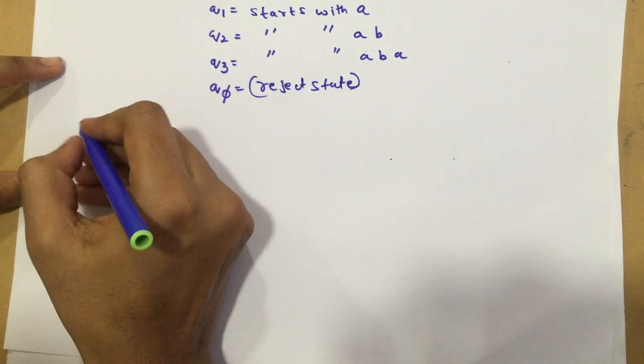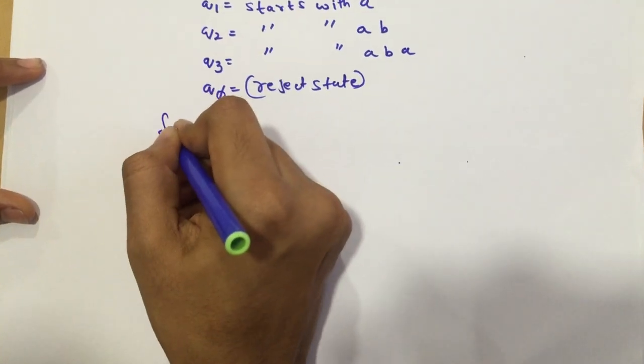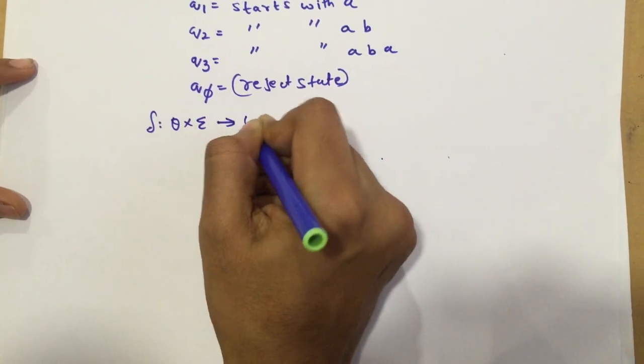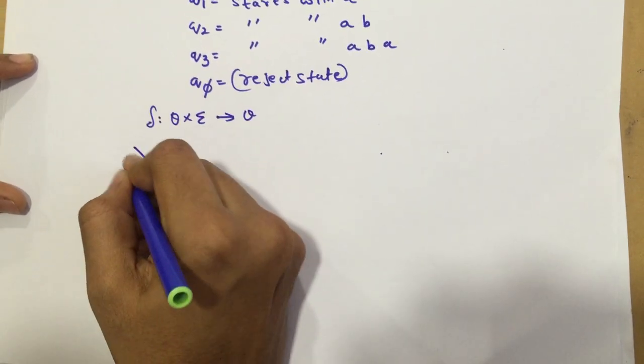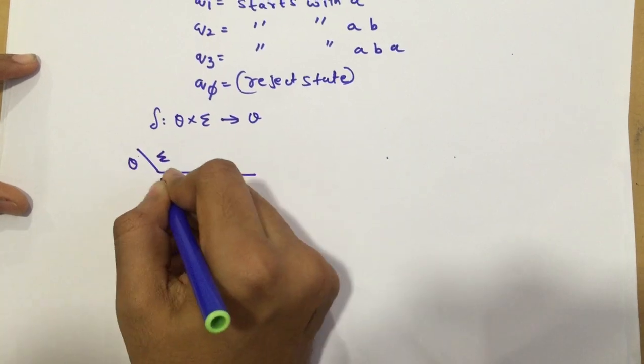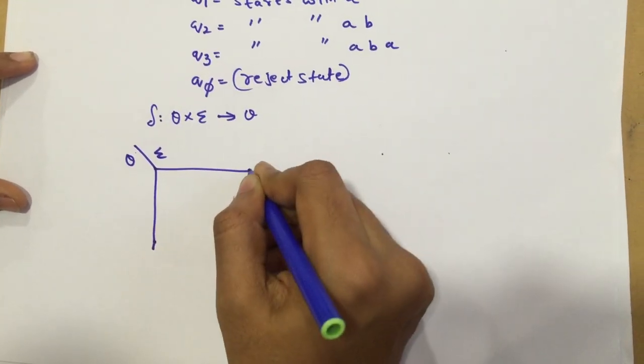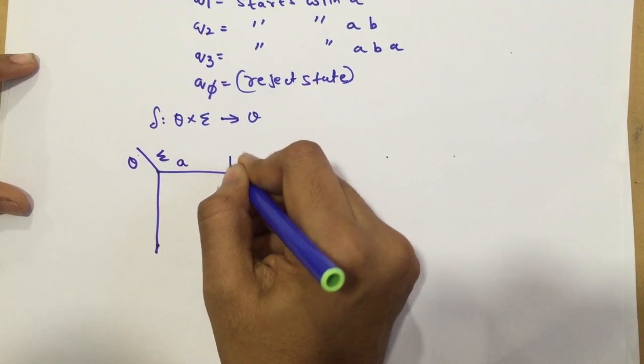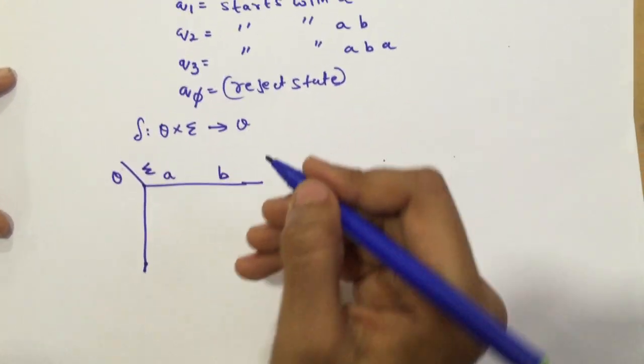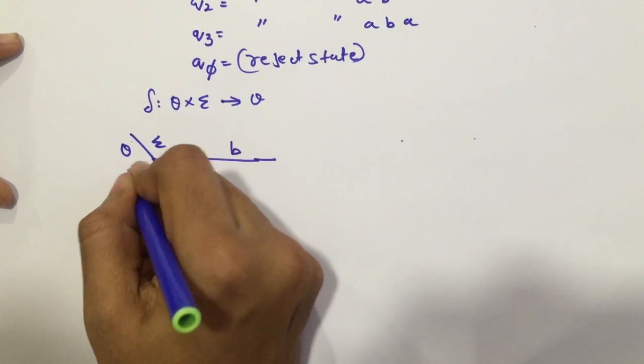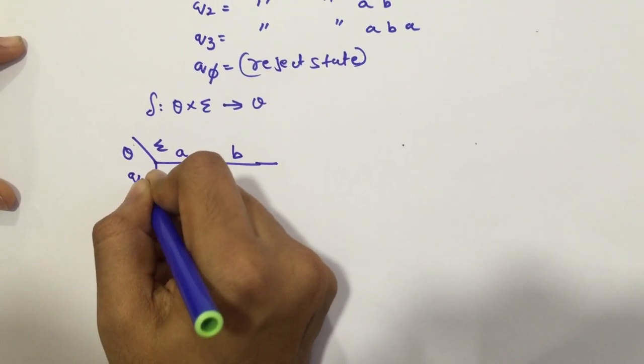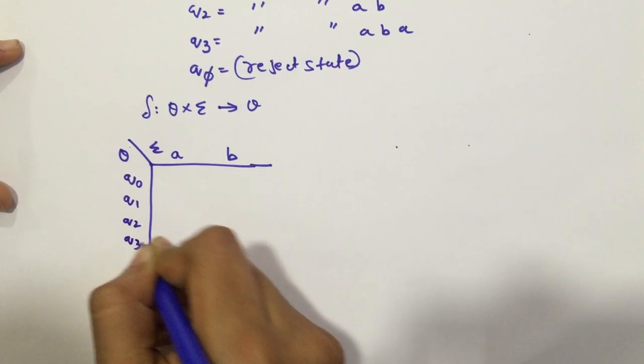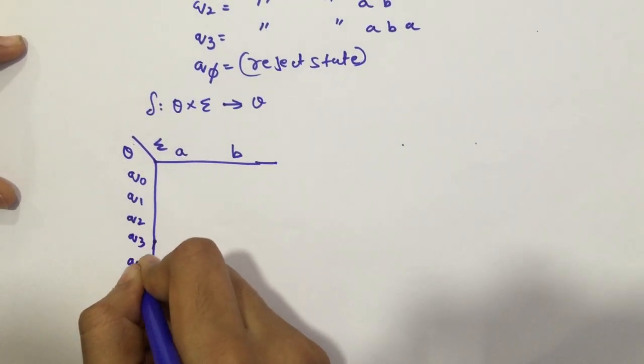I'm going to explain what this function was. Well, this function is going to give me Q into summation gives me Q. So, I'm going to draw a Q versus summation table and the results are going to be of Q only. So, it will be Q0, Q1, Q2, Q3 or Q5. So, I'm going to write here Q0, Q1, Q2, Q3 and Q5.